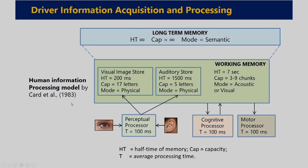In the human information processing model, there are various aspects of the human brain and various types of processors. There is a perceptual processor — at the bottom it is written 'half time of the memory,' meaning every certain time the memory decays to half of the original amount. CAP is for capacity and T for average processing time. While the driver is receiving some visual or auditory information, it goes to the perceptual processor where the average processing time is 100 milliseconds.